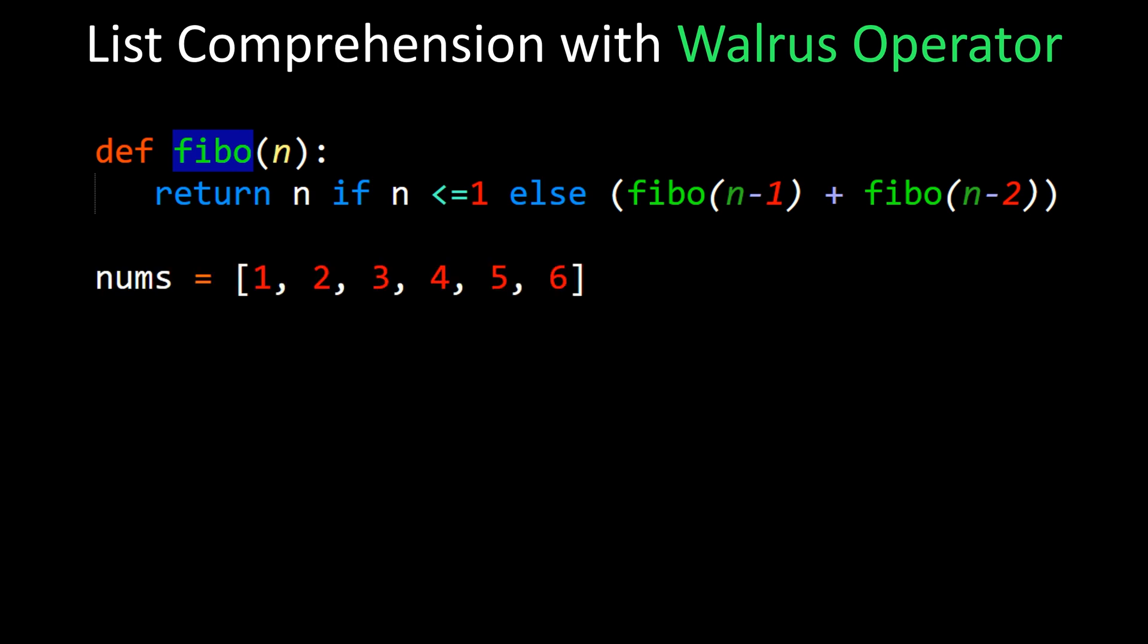And so if we take another definition of nums that goes from 1 to 6, we can create a basic list comprehension that applies the fibo function to each element of nums, resulting in the familiar Fibonacci sequence of 1, 1, 2, 3, 5, 8.